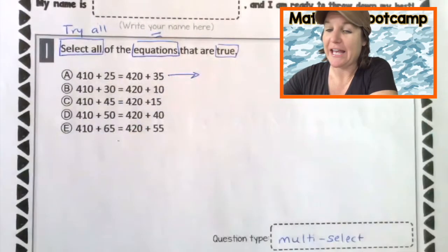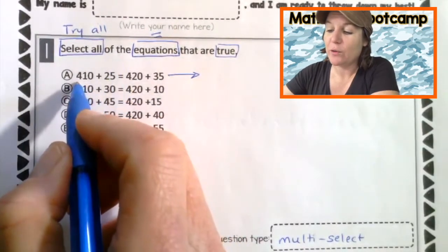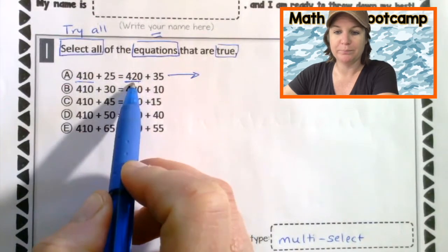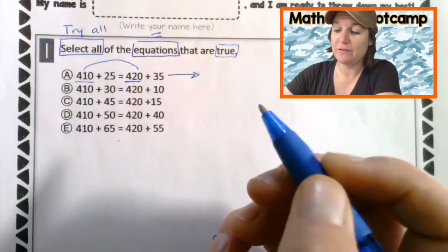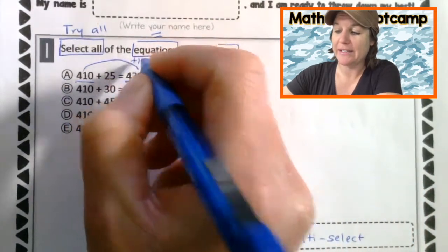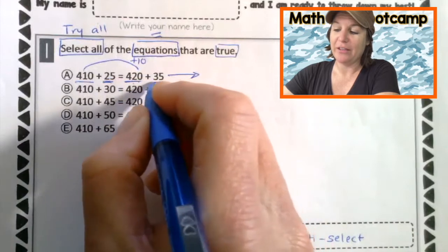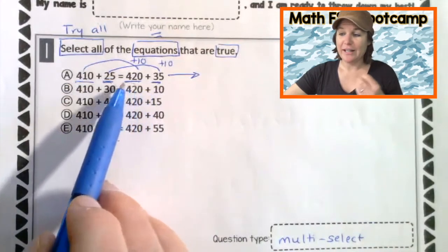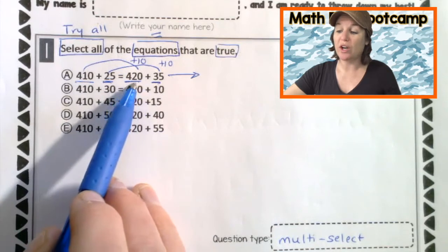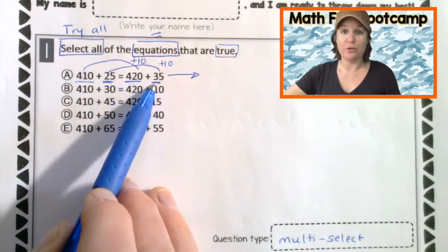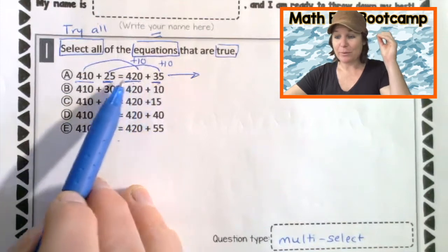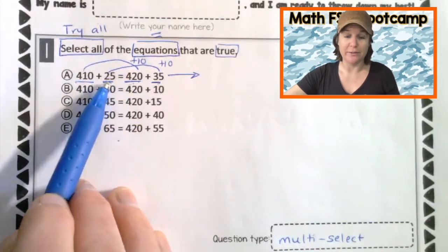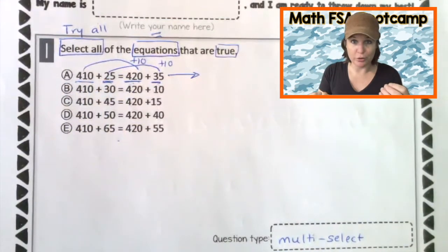So let's go ahead and take a look at A. Now we have 410 right here. What's happening between 410 and 420? We're going up, right? So between 410 and 420, we're adding 10 to get there. And then we have 25 and 35. And we're also adding 10 to get there. This side over here is plus 10 for both of them. So we have two larger numbers being added, 420 and 35. And we can tell that number when we add them together is going to be larger than adding 410 to 25 together. Therefore, this equation cannot be true. It needs to be false.